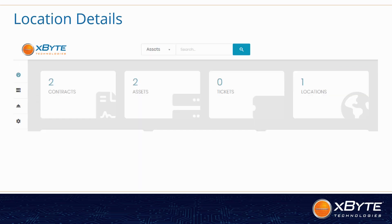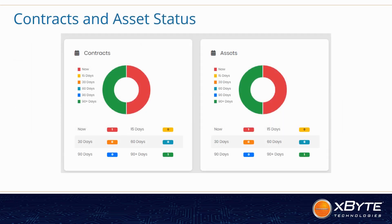All of this detail can also be exported if needed. The location option from the dashboard will show you the locations of where your multiple service tags might be located. This is helpful if you're managing multiple servers in different locations and different data centers.